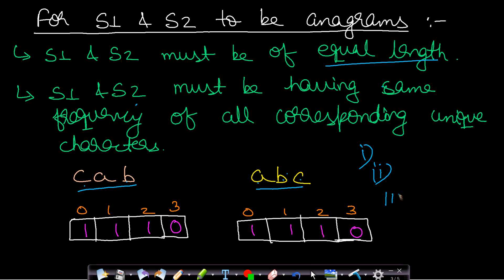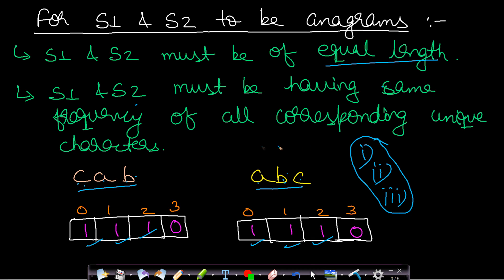The third condition is that the frequency of all corresponding unique characters should also be equal. In this case, 'abc' has frequency 1-1-1, and 'cab' has frequency 1-1-1 as well. Therefore all unique characters have the same frequency. If these three conditions are satisfied, we can say that s1 and s2 are anagrams of each other.